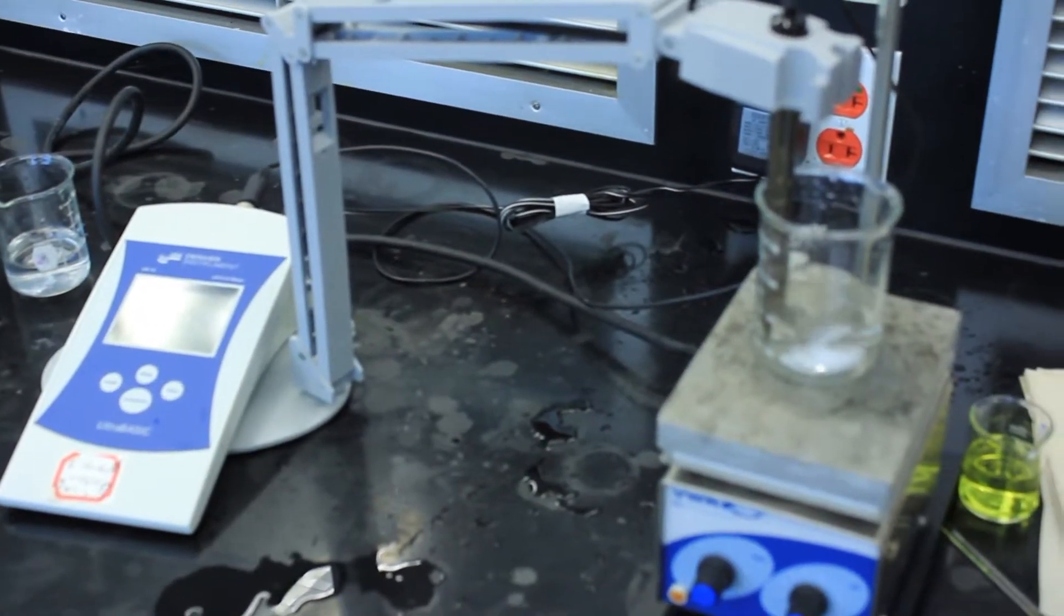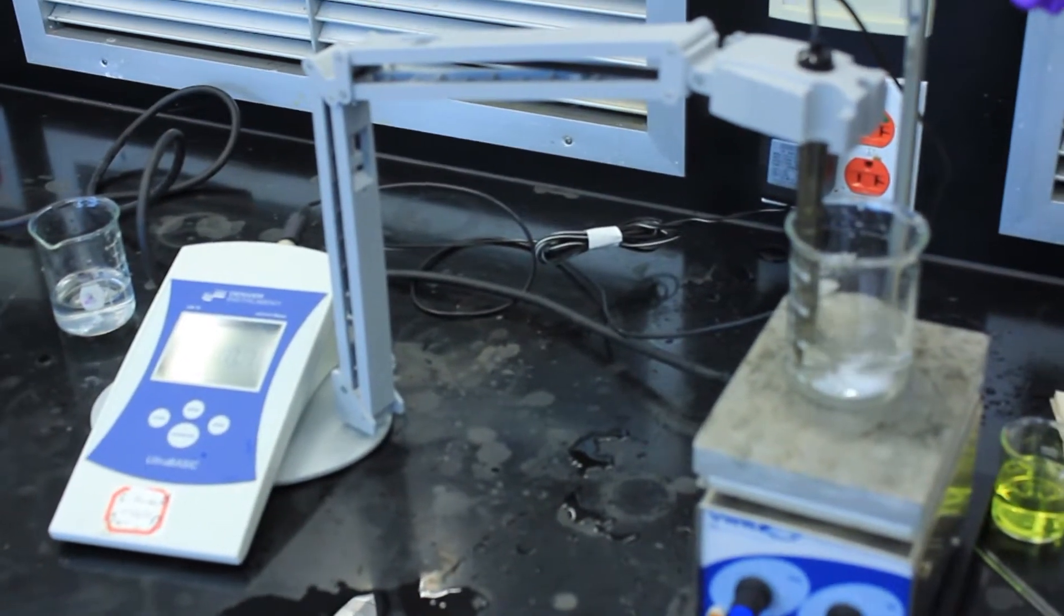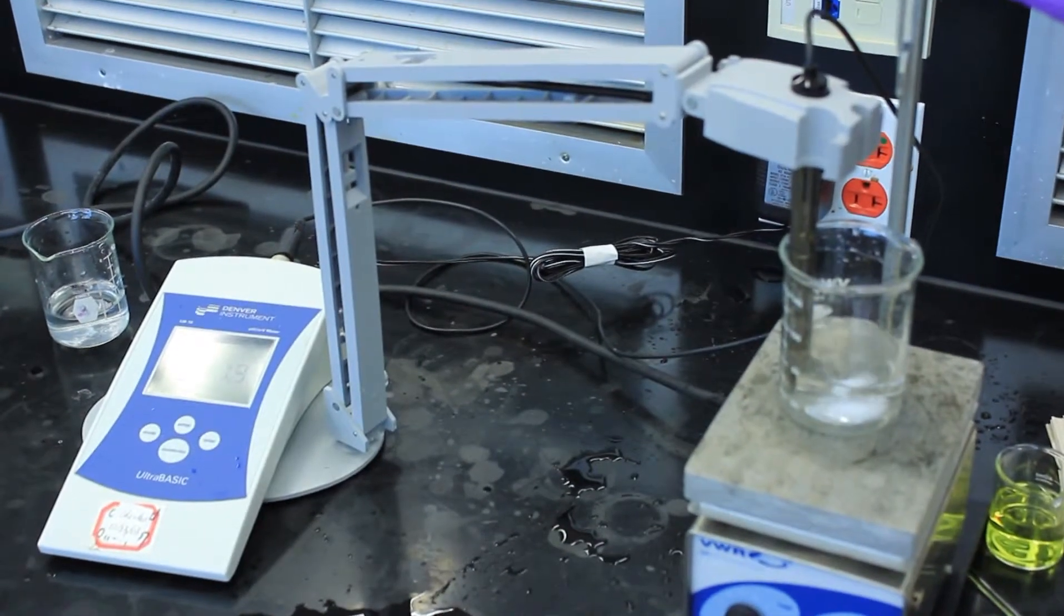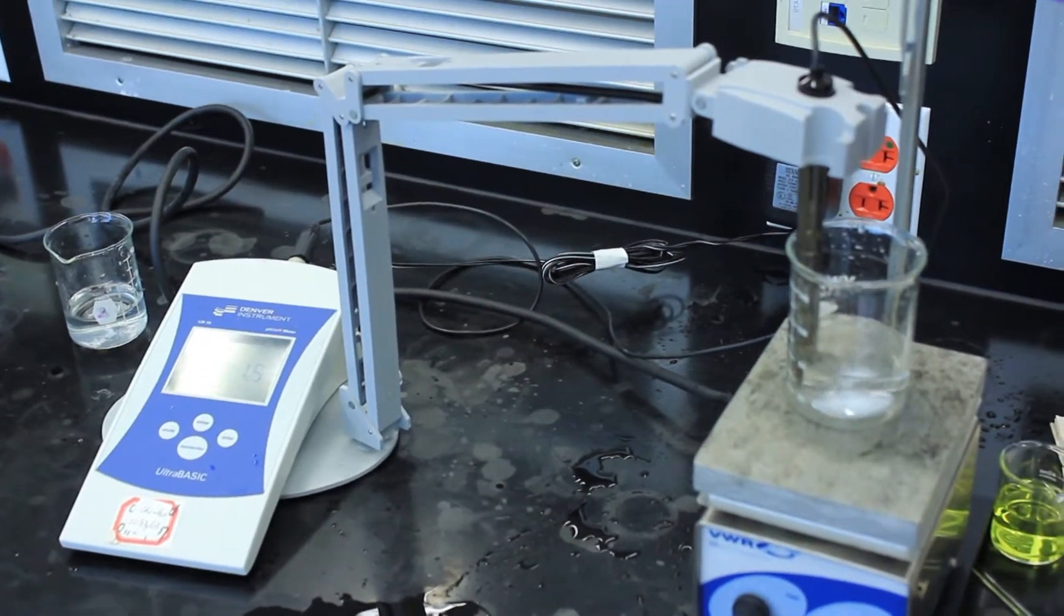Once you've approached your equivalence point, you can go ahead and shoot past it. You can start adding 2 milliliter aliquots again. Your pH will rise sharply and become very basic.